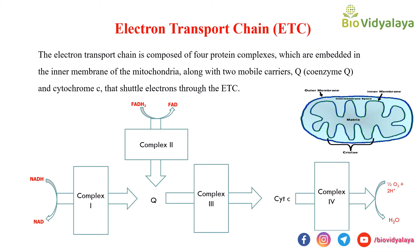The electron transport chain is composed of four protein complexes — Complex 1, Complex 2, Complex 3, and Complex 4 — which are embedded in the inner membrane of the mitochondria, along with two mobile carriers: coenzyme Q (also known as ubiquinone) and cytochrome C. Coenzyme Q accepts electrons from Complex 1 and Complex 2 and transfers them to Complex 3. Cytochrome C shuttles electrons between Complex 3 and Complex 4, and the final electron acceptor is oxygen.